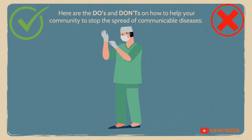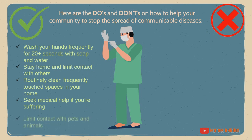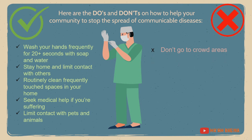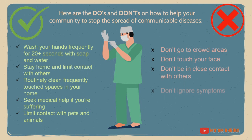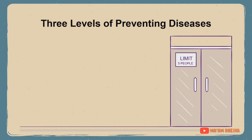Here are the do's and don'ts on how to help your community stop the spread of communicable diseases. Do: wash your hands frequently for 20-plus seconds with soap and water; stay home and limit contact with others; routinely clean frequently touched spaces in your home; seek medical help if you're suffering; limit contact with pets and animals. Don't: go to crowded areas; touch your face; be in close contact with others; ignore symptoms; or leave your home, especially if sick.